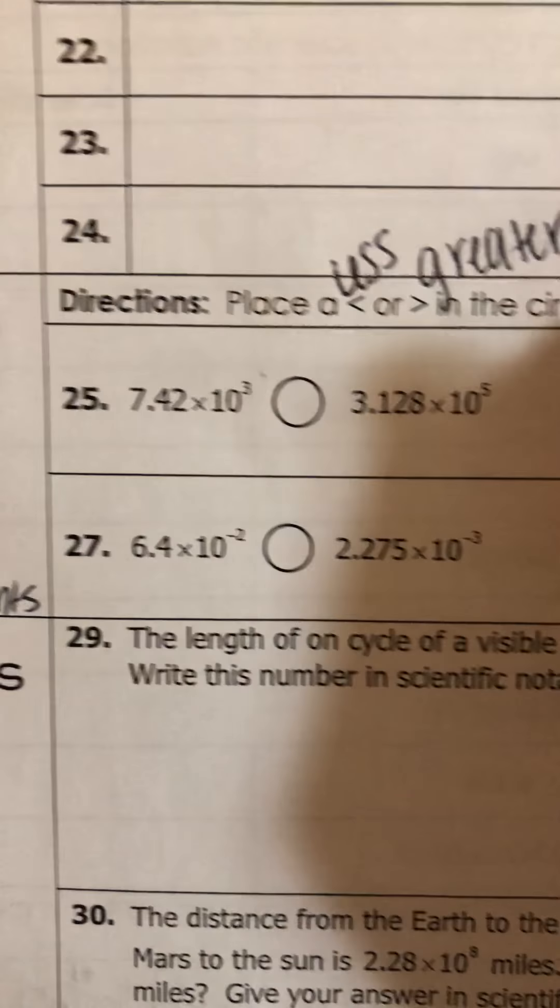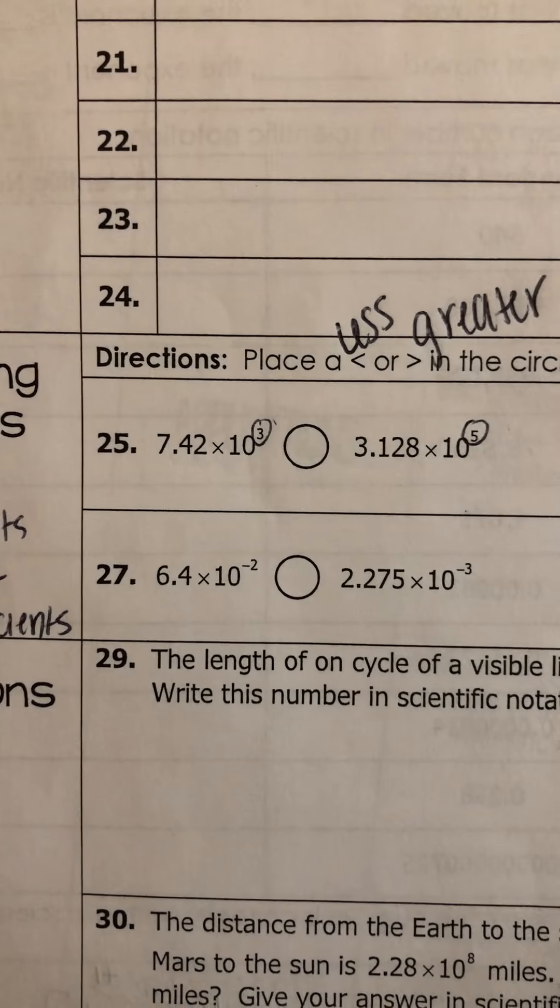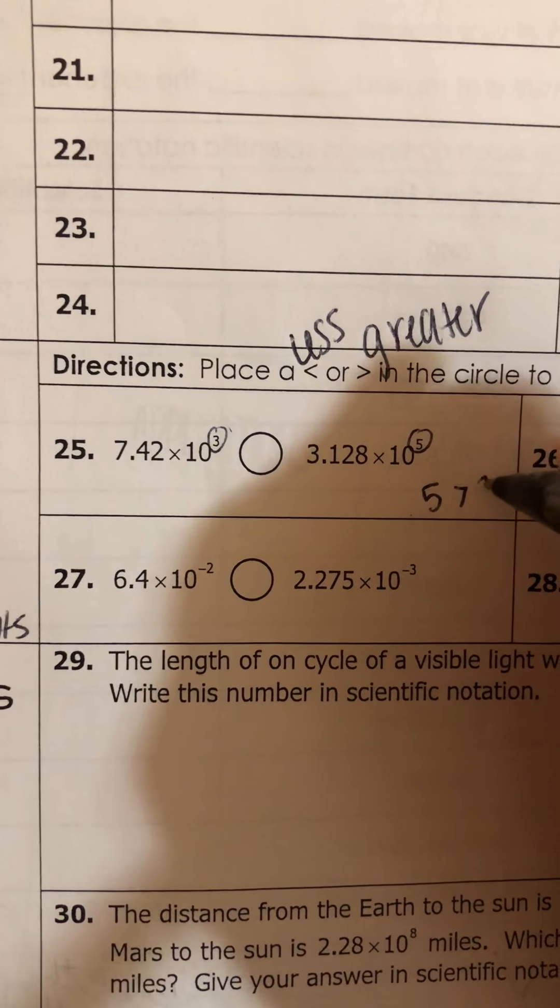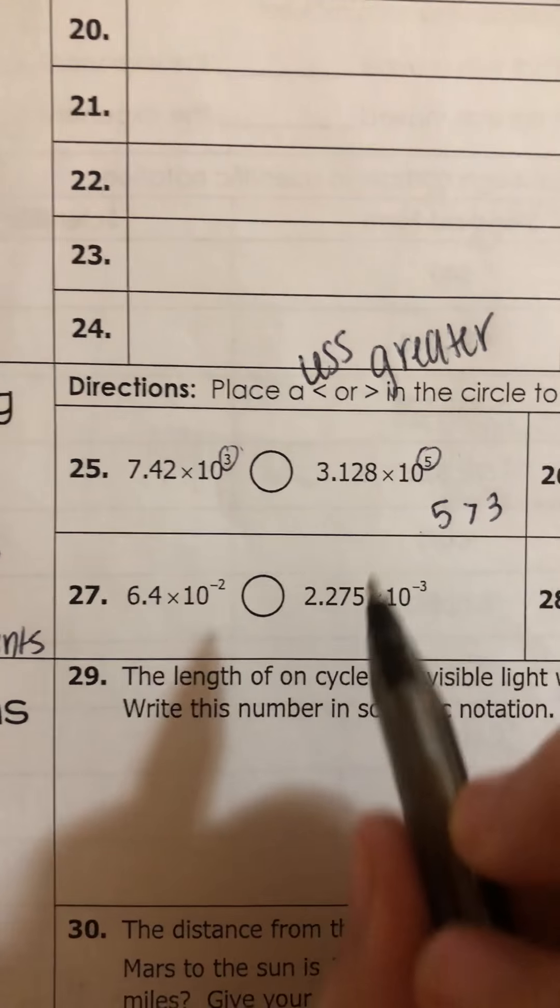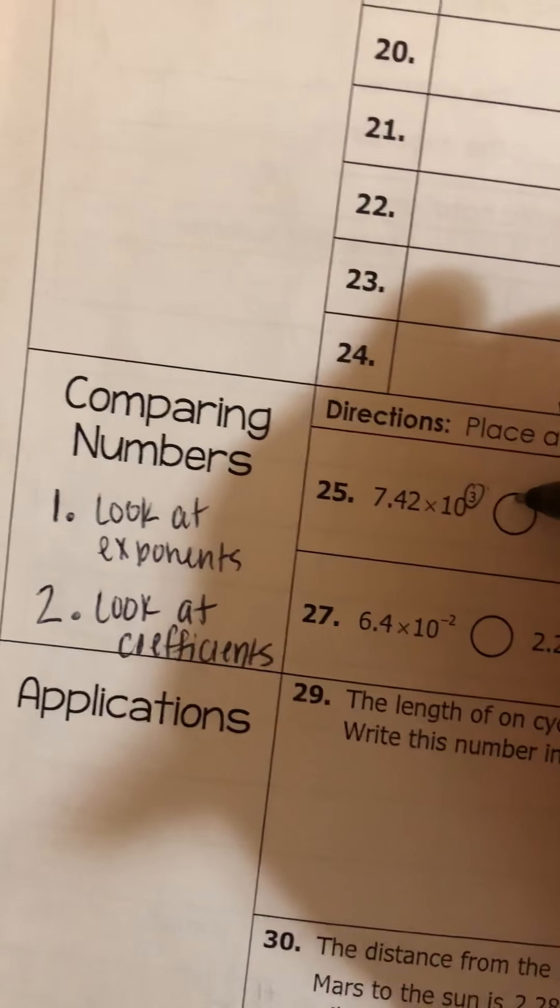So all we have to do is look at whose exponent is greater. Well, 5 is greater than 3. So we're going to have this one be the bigger number. So we're going to put a less than sign towards the 3.